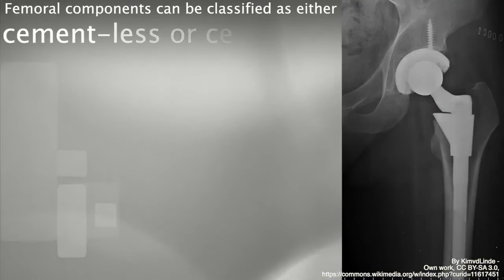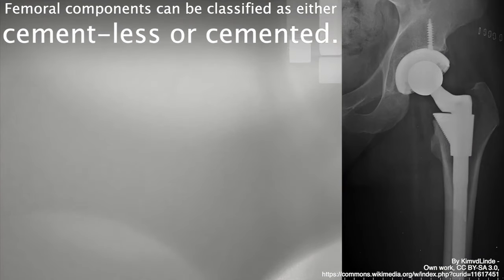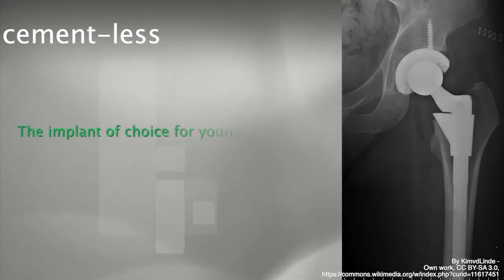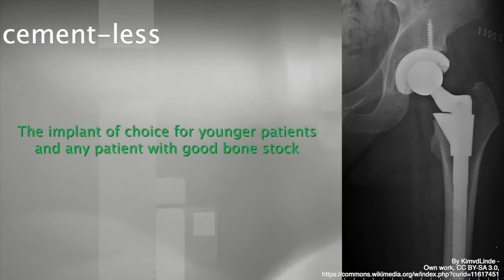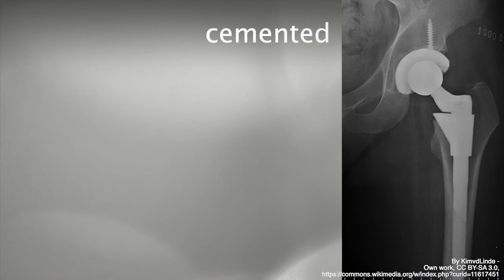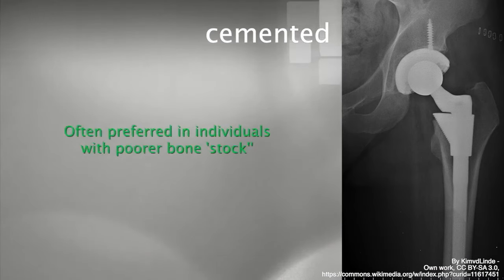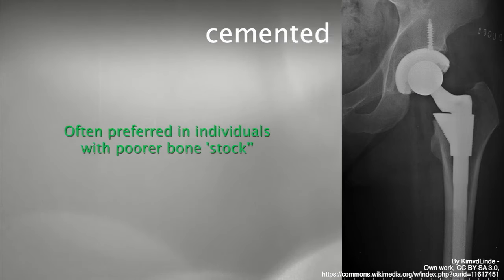Regarding the femoral component, femoral components can be classified as either cementless or cemented. A cementless femoral component is the implant of choice for younger patients and any patient with good bone stock, particularly those with thick femoral cortices and smaller diameter femoral canals. However, in older patients and those with osteoporosis, it may be more difficult to get good initial stability with the cementless component, and there is a higher risk of periprosthetic femoral fracture.